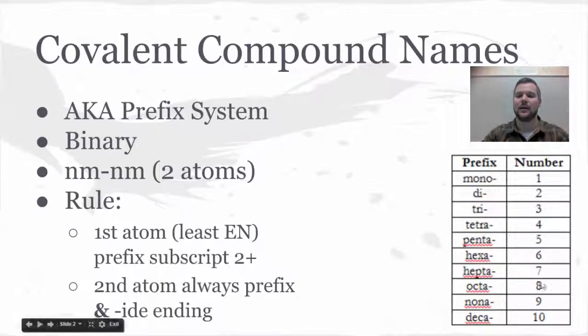Octa, octagon, octopus, octomom, eight. Nona has two Ns, like nine. And then deca, decathalon, decathlon.